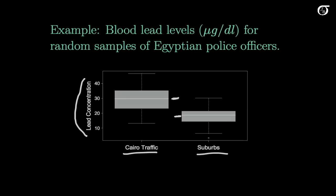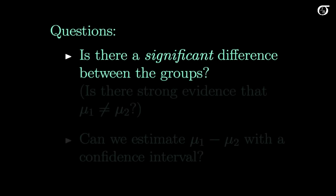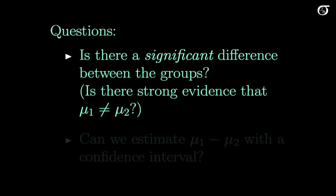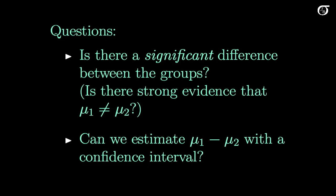We phrase things in certain ways. We might ask: is there a significant difference between the groups? Is there strong evidence that those two groups actually have different population mean blood lead levels? That's a very common question. We also want to estimate the difference in population means, μ1 minus μ2, with a confidence interval. We estimate that difference using the difference in the sample means, x̄1 minus x̄2.